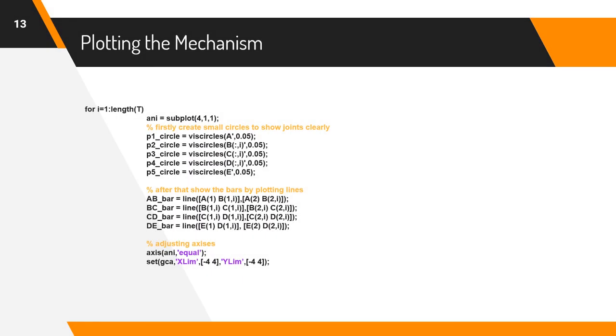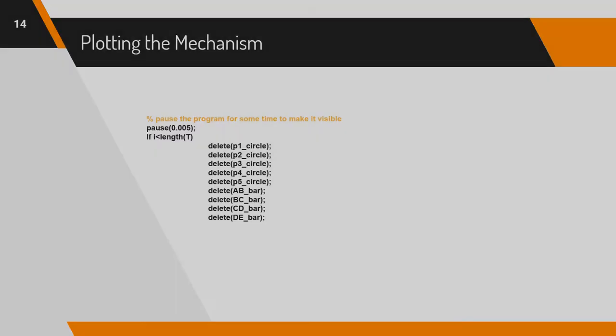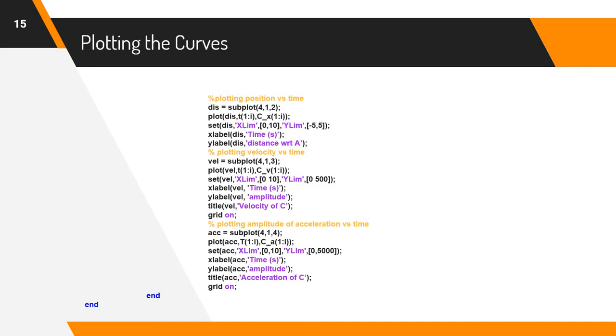Let's plot the mechanism. Firstly, create small circles to show joints clearly. After that, show the bars by plotting lines between respective points. Now, pause the program for some time to make the mechanism visible. After that, delete all circles and lines to update the position. Then, plot position vs time, velocity vs time, and acceleration vs time curves. Now, we are done with the MATLAB code.